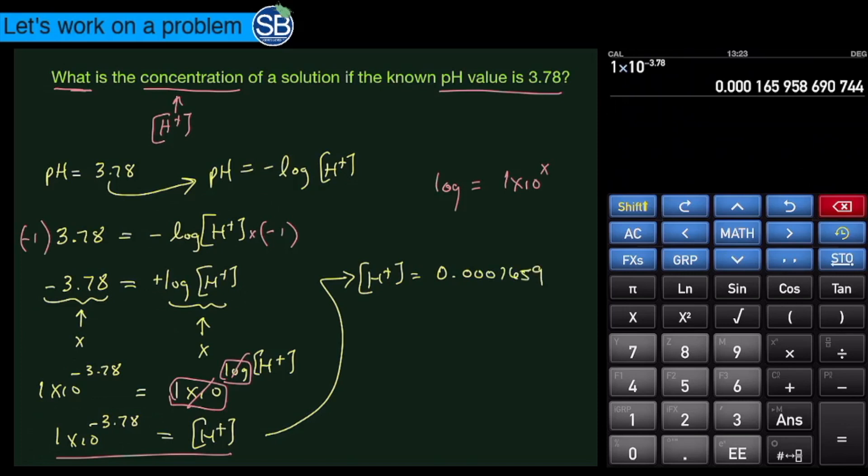In this particular case, the hydrogen ion concentration is equal to 0.0001659. That right there would be your answer. Now if they want you to make sure that you have significant figures factored into this, you've got to take that into account, in which case the answer then becomes 1.66 times 10 to the negative 4, and that would also be the correct answer.